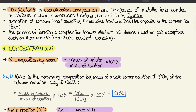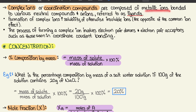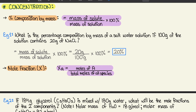Complex ions or coordinate compounds are composed of metallic ions bonded to neutral compounds and anions called ligands. The formation of complex ions increases the solubility of otherwise insoluble ions — the opposite of the common ion effect. This process involves electron pair donors and acceptors, as seen in coordinate covalent bonding.